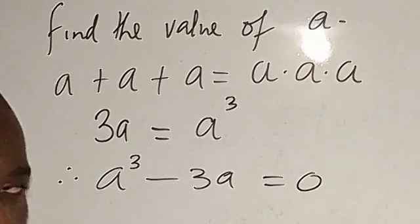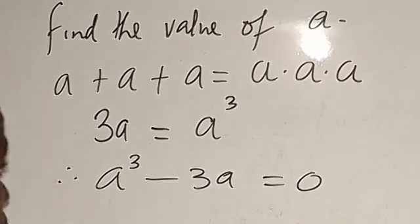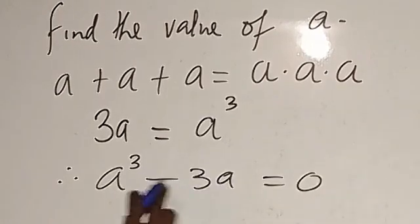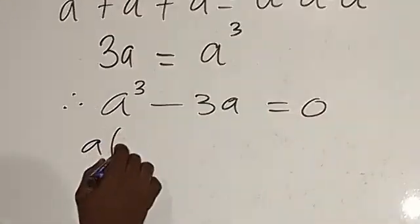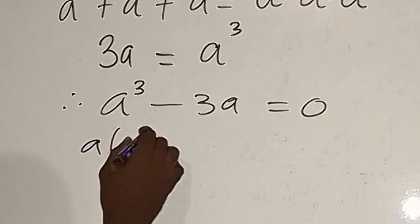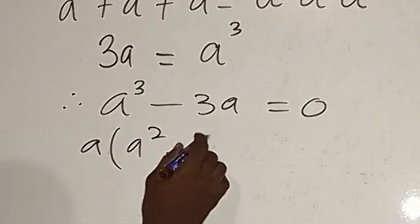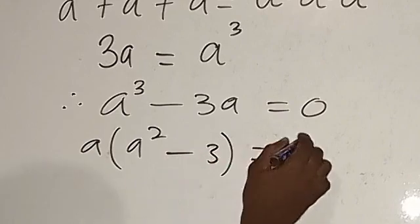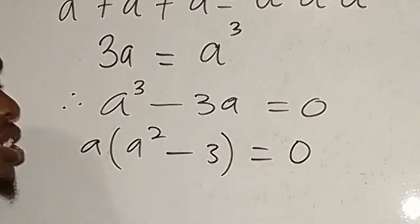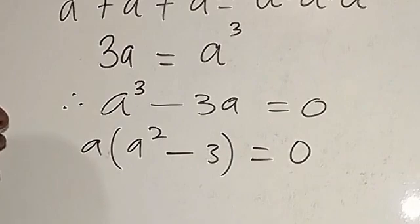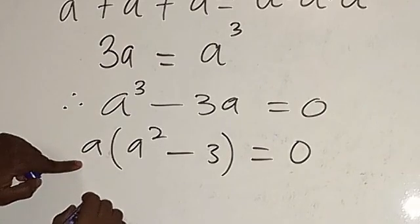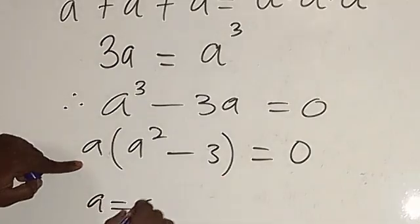From here, we can see that we have a - a is common. Factorize a out, so this will be left with a(a² - 3) = 0. This is zero form equation, so a must equal zero.